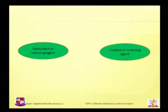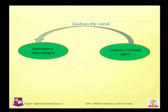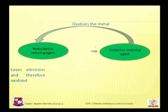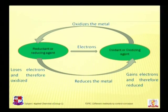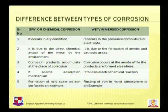Hello and welcome to the next session of metal corrosion and its control. In the last session we have seen what is corrosion, what is its mechanism, how corrosion takes place on different metals, and what are the different types of corrosion. Let us revise: corrosion occurs on a metal which is called the reducing agent or reductant, and another one which accepts electrons is the oxidant or oxidizing agent. The oxidizing agent oxidizes the reducing agent by the loss of electrons — the reducing agent is oxidized. The electrons released are transferred to the oxidizing agent, so the oxidant is reduced by gaining electrons.